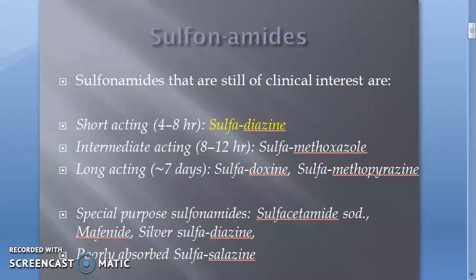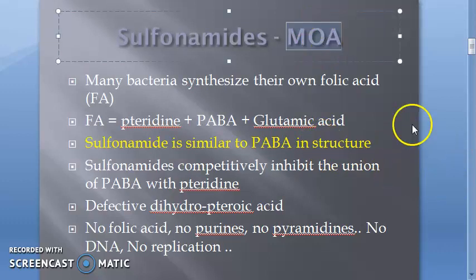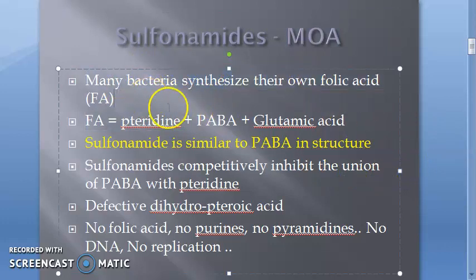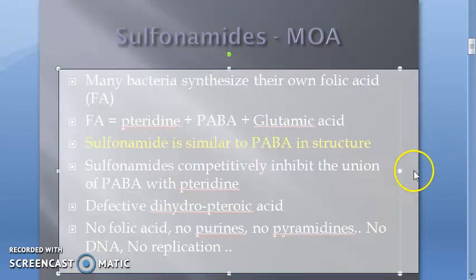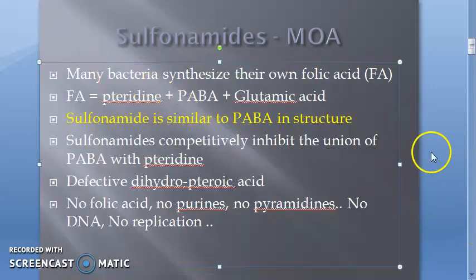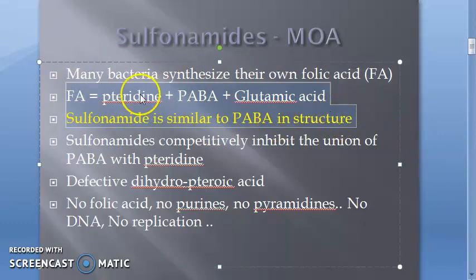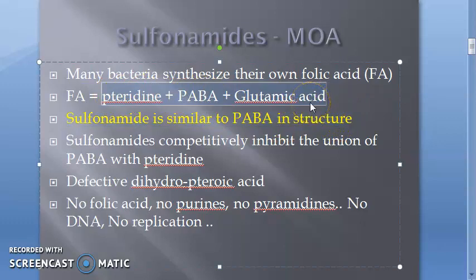Sulfonamides are basically bacteriostatic agents. Regarding their mechanism of action: bacteria synthesize their own folic acid, whereas humans cannot synthesize folic acid. The bacteria synthesize folic acid by taking pteridine, PABA, and glutamic acid and joining them together to make folic acid.